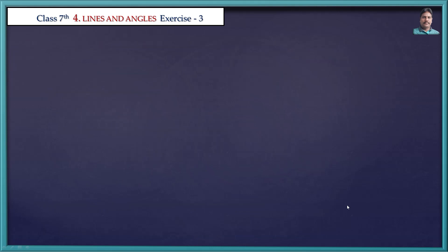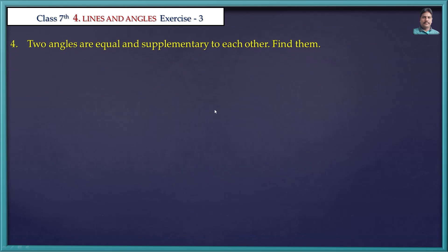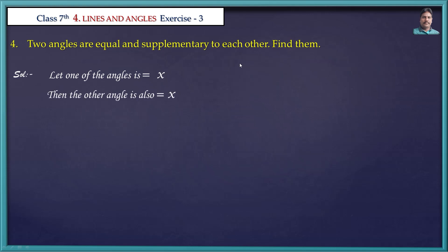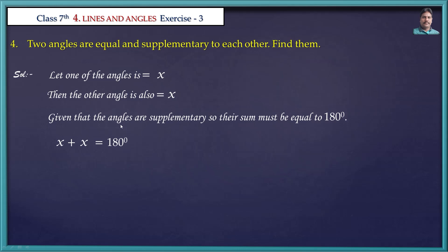Next problem: Two angles are equal and supplementary to each other. Find them. Let us solve this problem. Let one of the angles be x degrees. Then the other angle is also x. Since they are supplementary, x plus x gives 180 degrees.